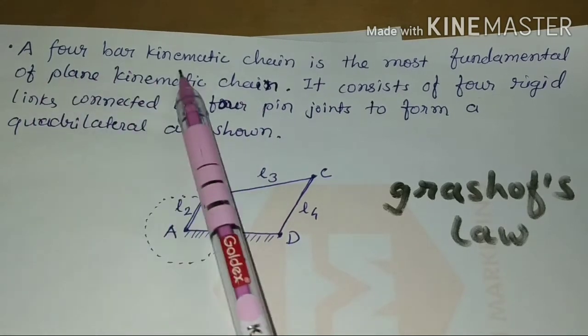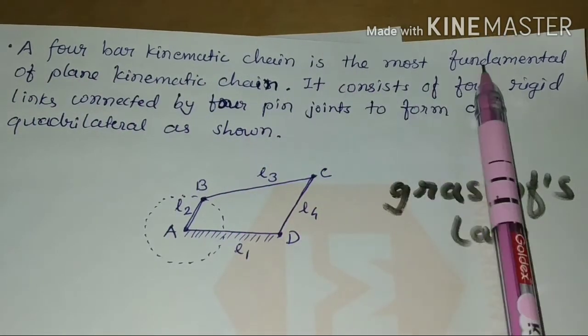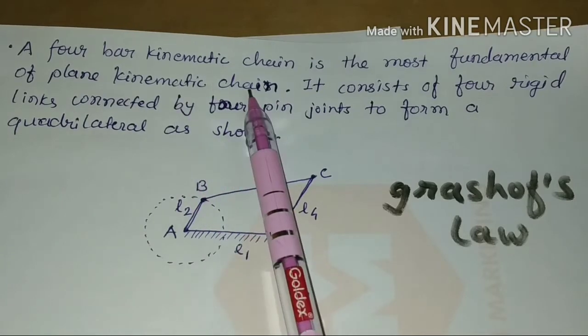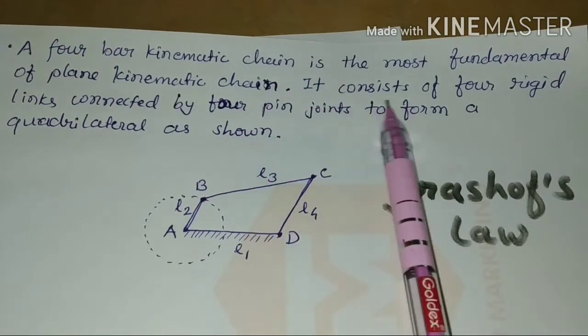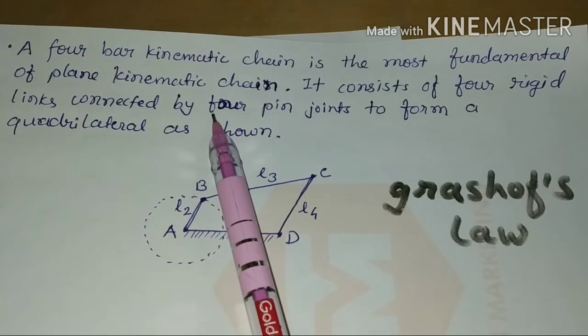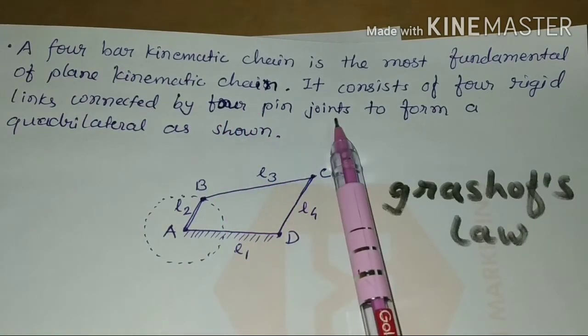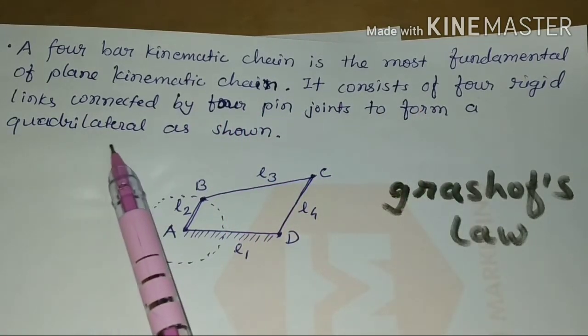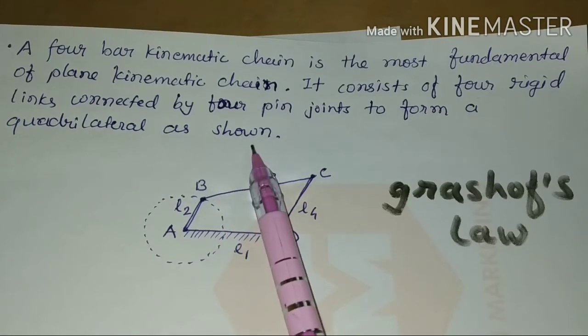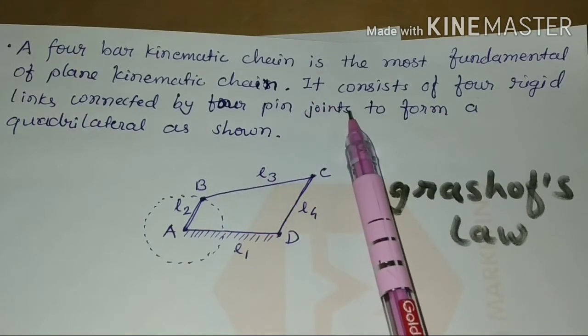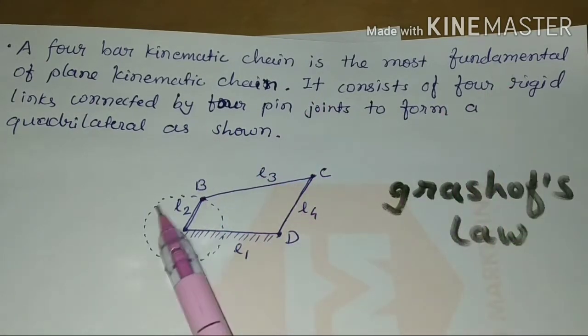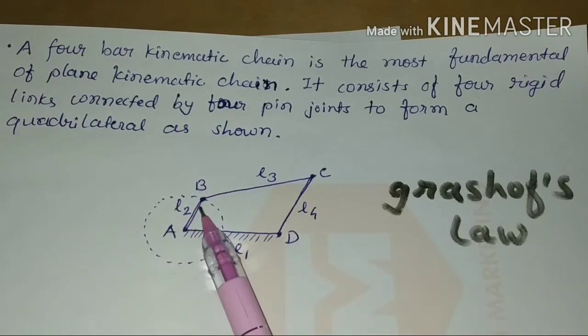4 bar kinematic chain is the most fundamental of planar kinematic chain. It consists of 4 rigid links connected by 4 pin joints to form a quadrilateral as shown.